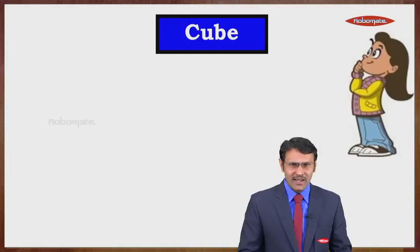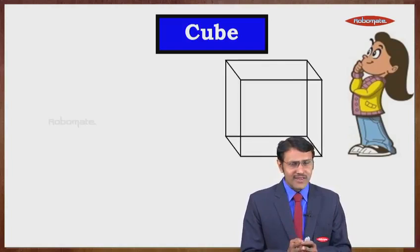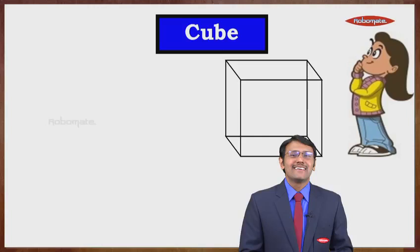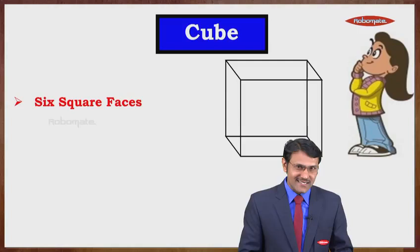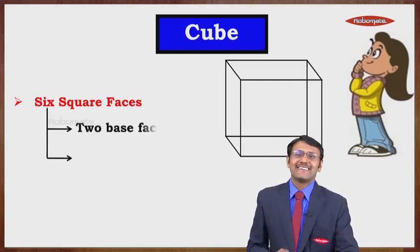Let us start with the cube. Some examples of a cube that we see in our day-to-day life: the Rubik's cube, ice cube, or the dice. These are a few examples of a cube. What we see on the screen is a cube — it is made up of six faces and all are square in shape.